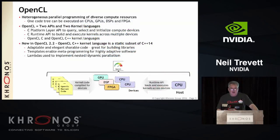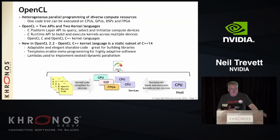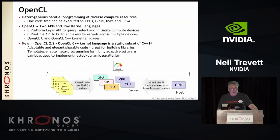OpenCL is a framework for heterogeneous parallel programming. That means you can write an application that makes use of any parallel compute resources on the system — a multi-core CPU, one or more GPUs, DSPs, particularly if you're in a mobile phone, and FPGAs. OpenCL is a single framework that lets you write small kernels in a C or C++-like kernel language, interrogate those resources with an API, build and compile those kernels, distribute them across available processors as you want, and bring back the results.